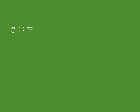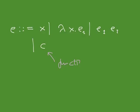The syntax of the applied lambda calculus is just like the one on the previous slide. Moreover, you have constants, and constants are functions that have some number of arguments. Constants belong to a new syntactic category that we call lambda-con. All you need to do is extend the semantics.